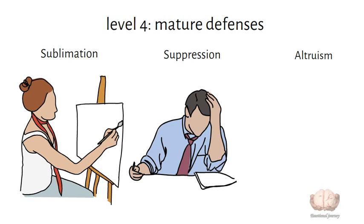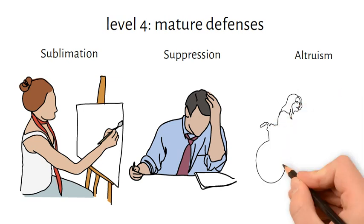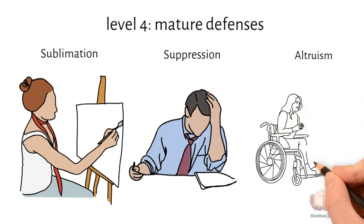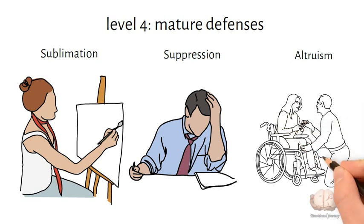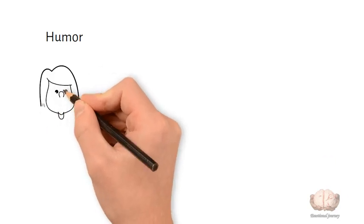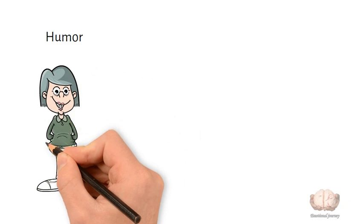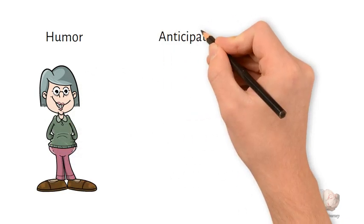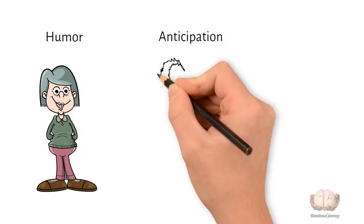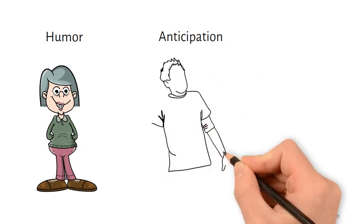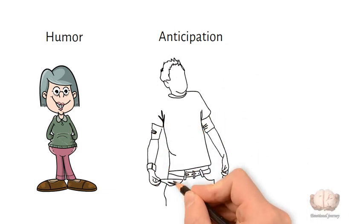Altruism: helping others to increase feelings of self-worth or cope with emotional conflicts. For example, volunteering at a homeless shelter to boost self-esteem. Humor: using comedy or jokes to express feelings in a socially acceptable way. For example, making light of a painful situation to lessen emotional impact. Anticipation: realistically considering possible future stressors and problems. For example, saving money in case of unexpected expenses.